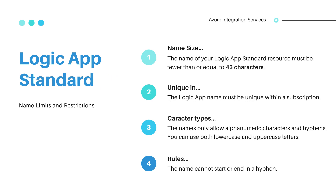Now, let's have a look at the Logic App Standard name restrictions. The name of your Logic App Standard resource must be fewer than or equal to 43 characters, but it also contains the following restrictions.